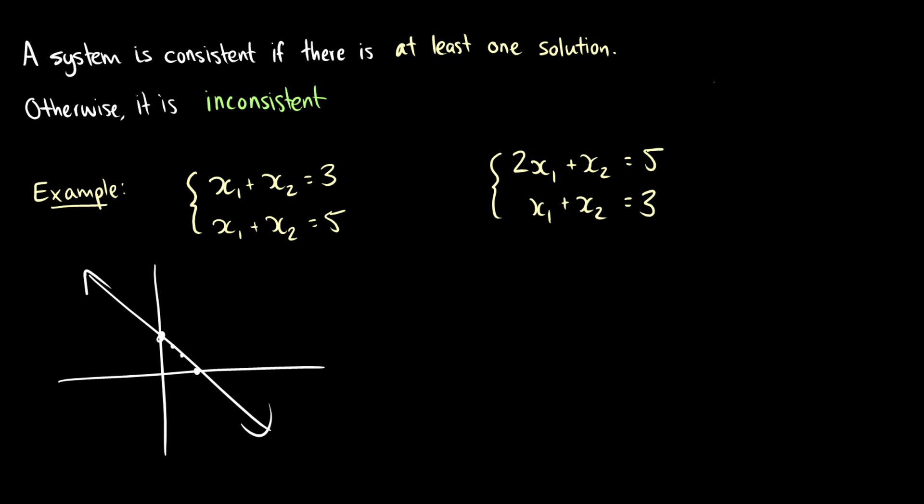In our second one, we have the same idea here where x1 plus x2 is equal to 5, but these lines will never meet each other. So there is no solution. So this set or system is inconsistent because there are no solutions to it. And we can basically see that the same number of variables is equal to different numbers. So we can tell these are inconsistent.